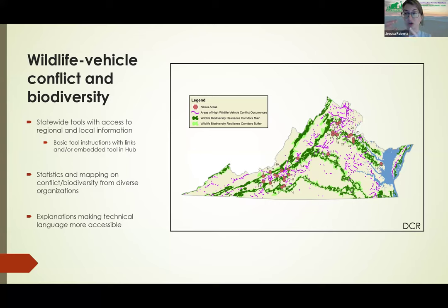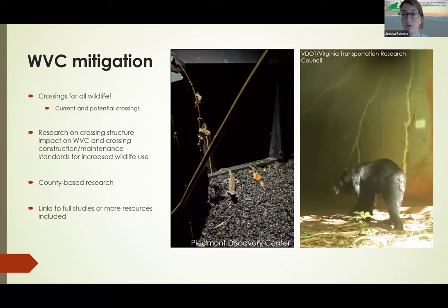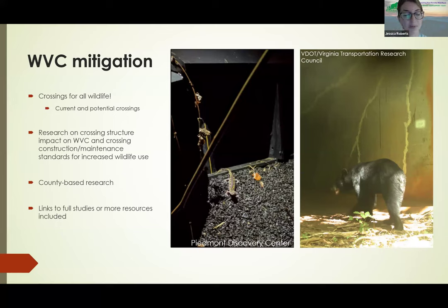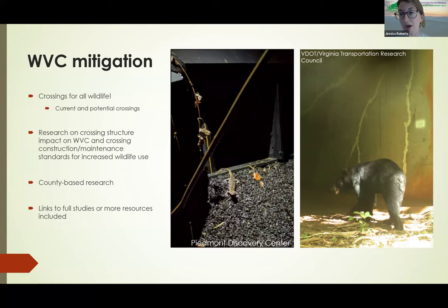Moving on to mitigation — for wildlife-vehicle conflict mitigation, we give examples of crossings for all types of wildlife, large and small, that are happening in the state. We cover current crossings and also potential crossings — research on where we can put potential crossings to deal with conflict and enhance biodiversity. We also include a lot of research on the impact of these crossings: the use of wildlife by these crossings and their impact on wildlife-vehicle conflict. We have specific crossing projects, and also county-based research on where potential crossings can go for Loudoun and Albemarle Counties specifically. For each project, we always link to full studies and more resources.